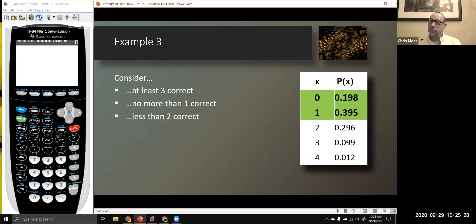Less than two correct. Less than two correct. Zero or one correct. Again, you'll notice that the last two define identical sets of outcomes.